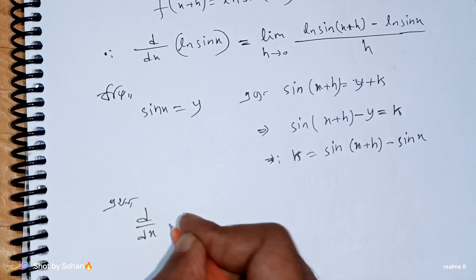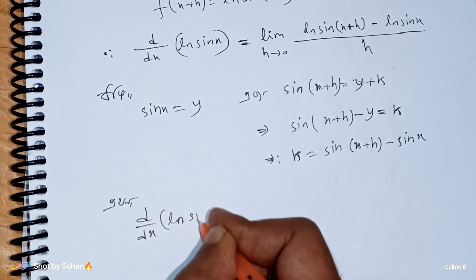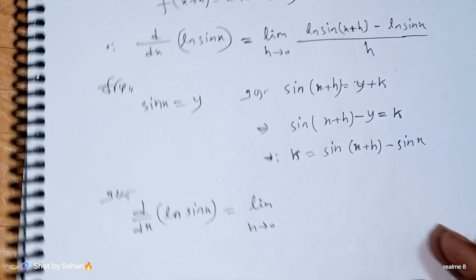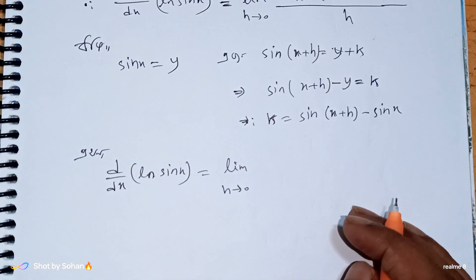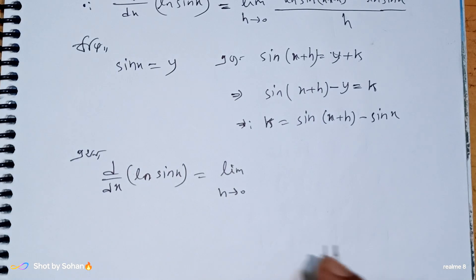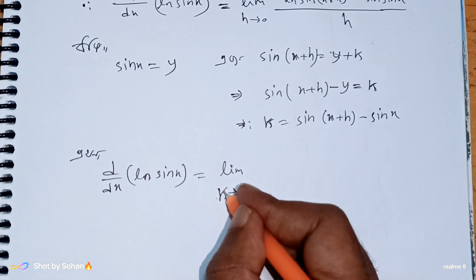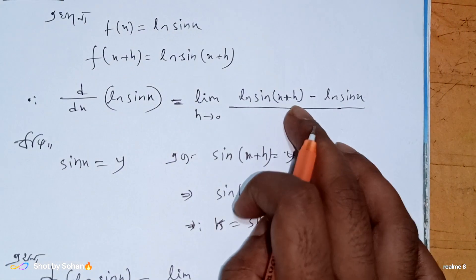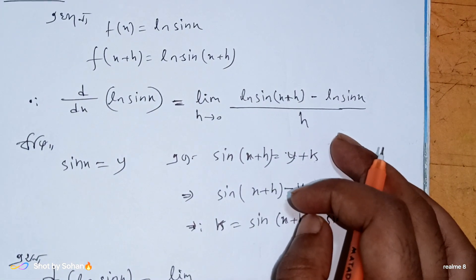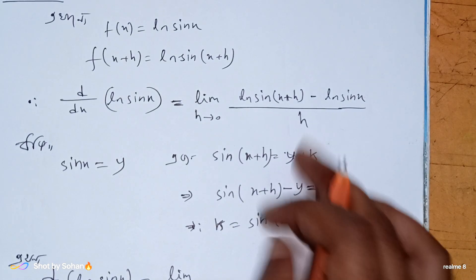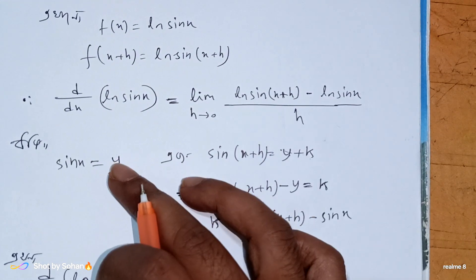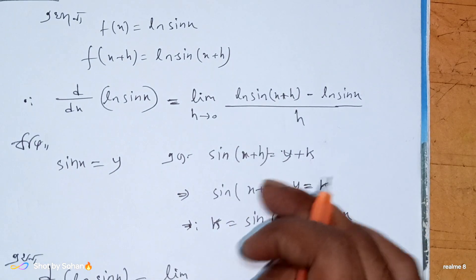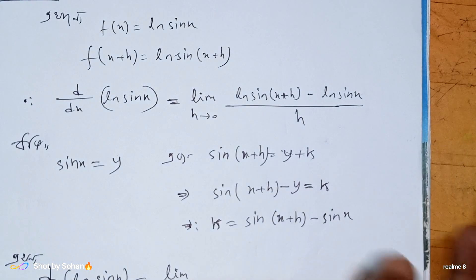d/dx of ln(sin x) equals limit h tends to 0. We substitute: sin(x plus h) is like y plus k, and sin x is like y, so h is like k. We use the logarithm property: ln a minus ln b equals ln(a/b).